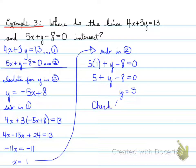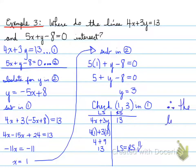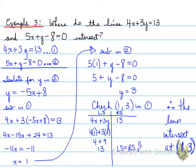Next, we check. Check (1, 3) — left side, right side — in equation number one. Left side is 13, right side is 13; left side equals right side. We've checked that our answer is correct. The lines intersect at (1, 3). That is the end of example number three.